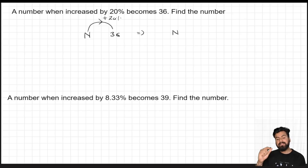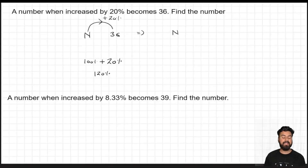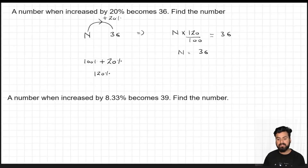Taking 120 by 100 to the other side — it gets inverted — and solving: 36 times 100 by 120 gives the value of N as 30. Using the multiplication factor concept, this is solved in just one line.